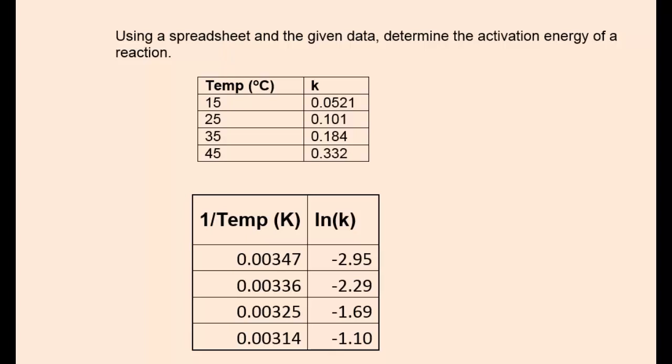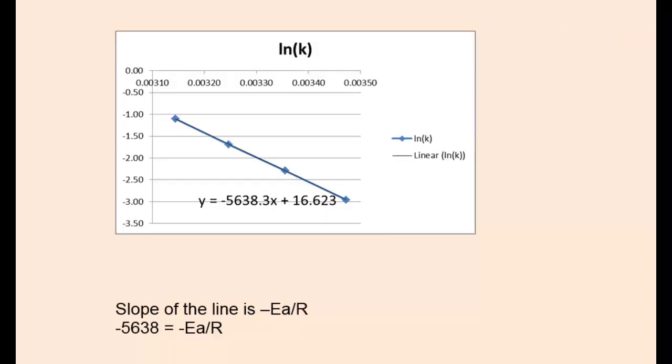Once we've done that, we can plot the data and determine the slope of the line. The plot is a straight line. The equation gives us the slope value, negative 5,638.